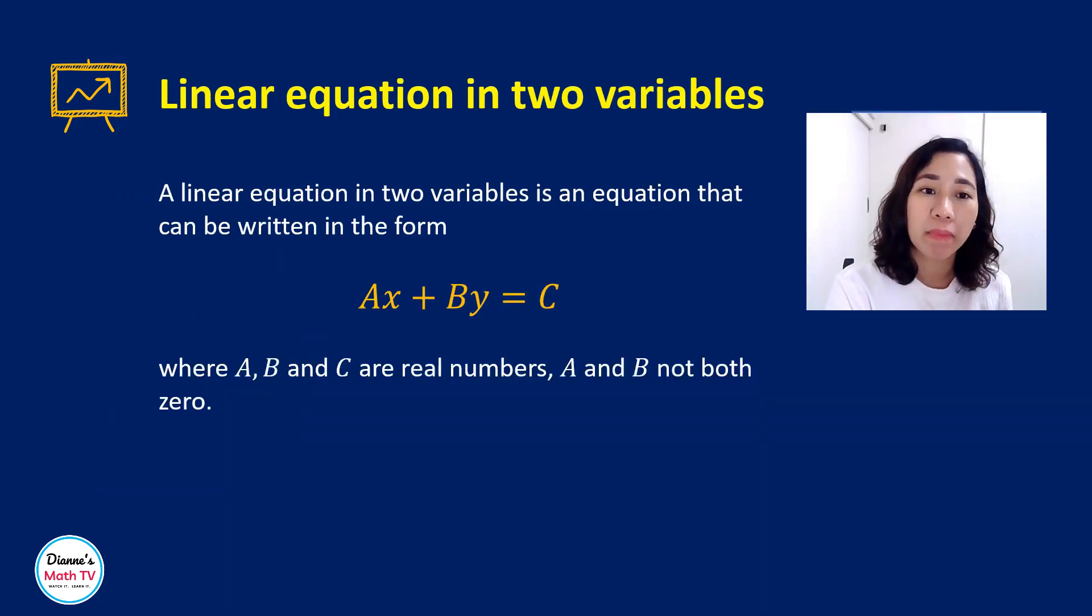Now, what do we mean by linear equation in two variables? So a linear equation in two variables is an equation that can be written in this form: Ax plus By is equal to C, where A, B, and C are real numbers. And take note that A and B cannot be both equal to 0.